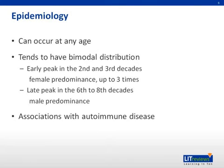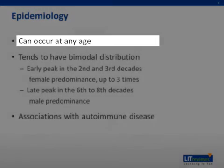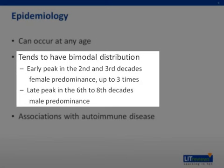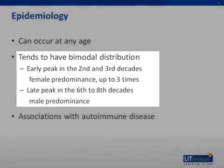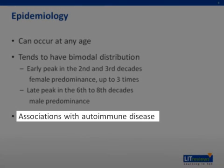MG has a prevalence of about 14 per 100,000 people in the United States. It can present at any age, and tends to have a bimodal distribution with female predominance during the second and third decades of life, and subsequently male predominance in the sixth to eighth decades. Patients with MG may also have concurrent autoimmune conditions, such as Graves' disease, rheumatoid arthritis, pernicious anemia, diabetes mellitus, et cetera.